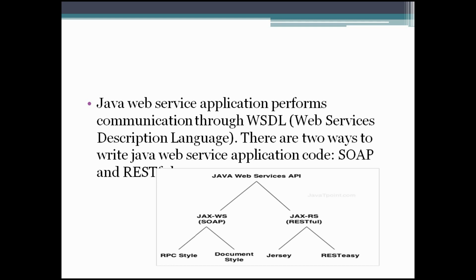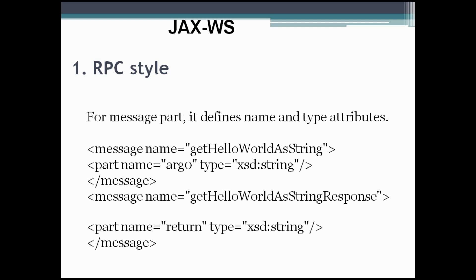RPC style uses method name and parameters to generate XML structure. The generated WSDL is difficult to validate against a schema. In RPC style, the SOAP message is sent as many elements. The SOAP message keeps the operation name and sends discrete values. The RPC style generated WSDL file does not specify type details; for a message part, it defines name and type attributes. For example, a message named 'getHello' with a parameter name specified in string format.